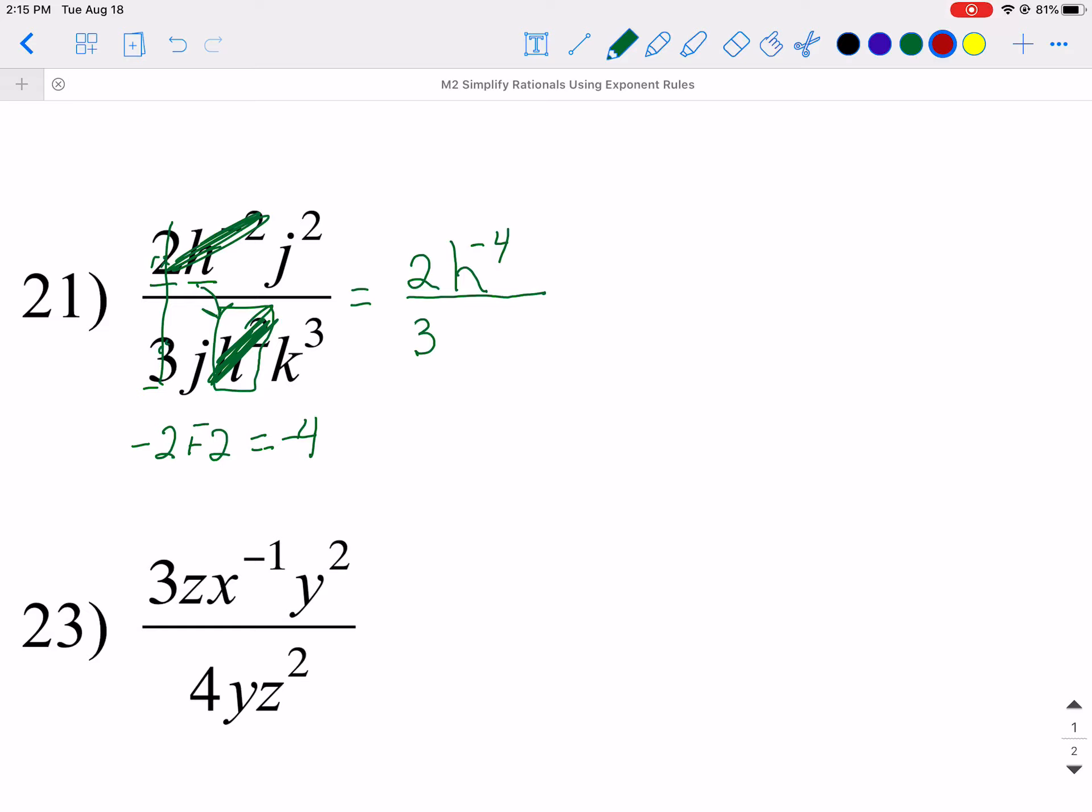So make sure you're doing your subtraction right. Use Desmos if you have to if you struggle with that. So j, I've got j². I'm going to look to see if there's something on the bottom, and I do see that there's j, no exponent, so that means 1. So 2 minus 1 is 1. So I'm going to leave my j, and I'm not going to put my exponent there because I know that if it doesn't have an exponent, it's 1. So my j's are done.